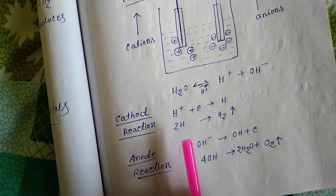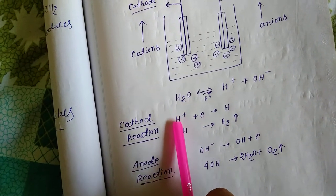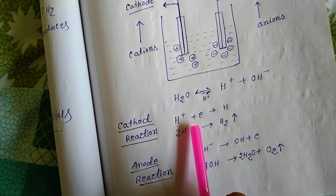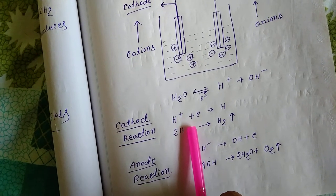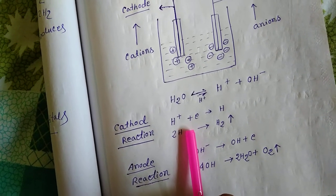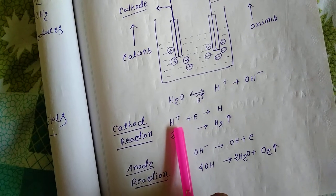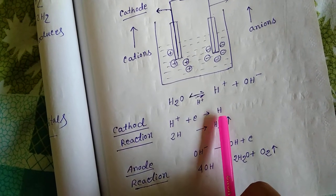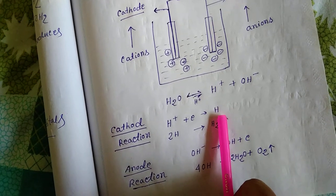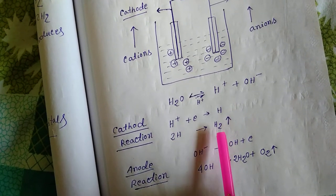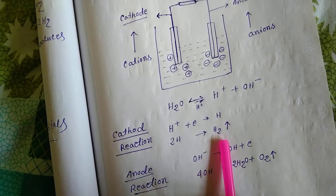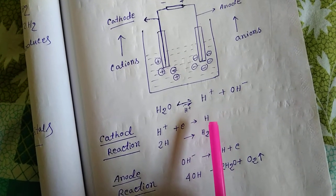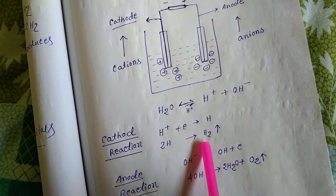Now for the cathodic reaction: H⁺ cations go towards the cathode, which is the negative electrode, so H⁺ takes an electron there and forms an H atom. Two H atoms combine to form hydrogen gas, which is liberated at the cathode.